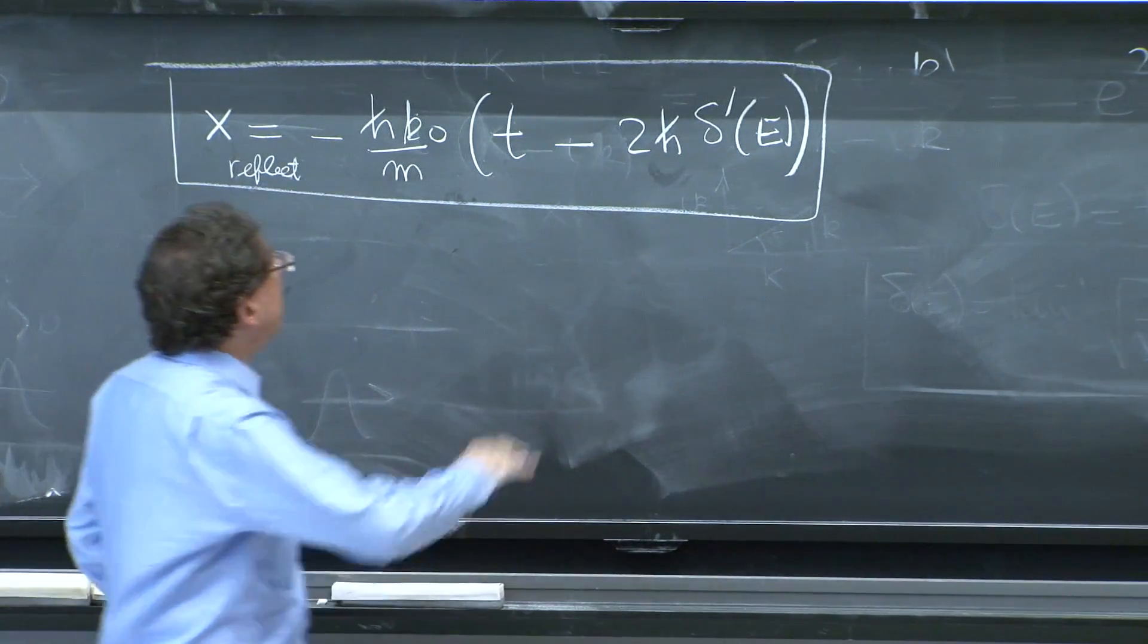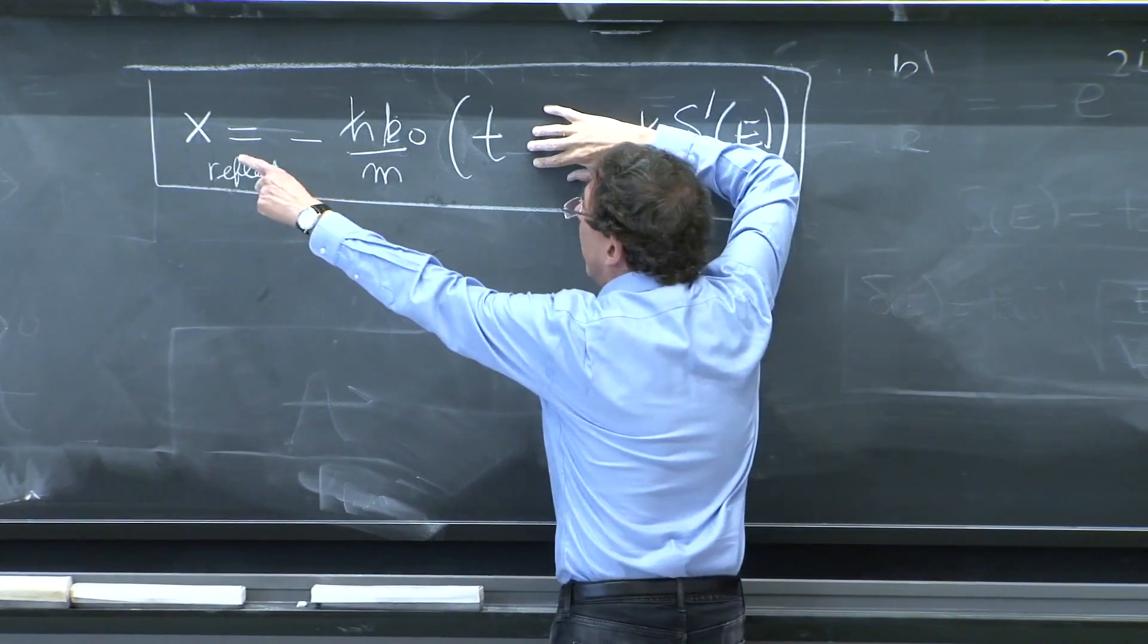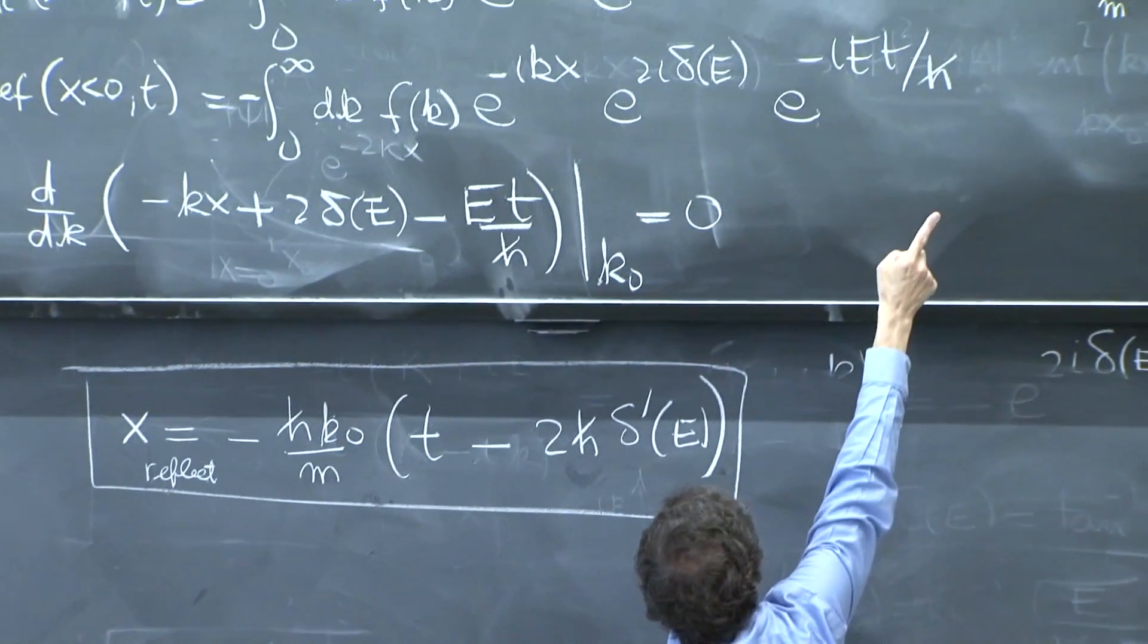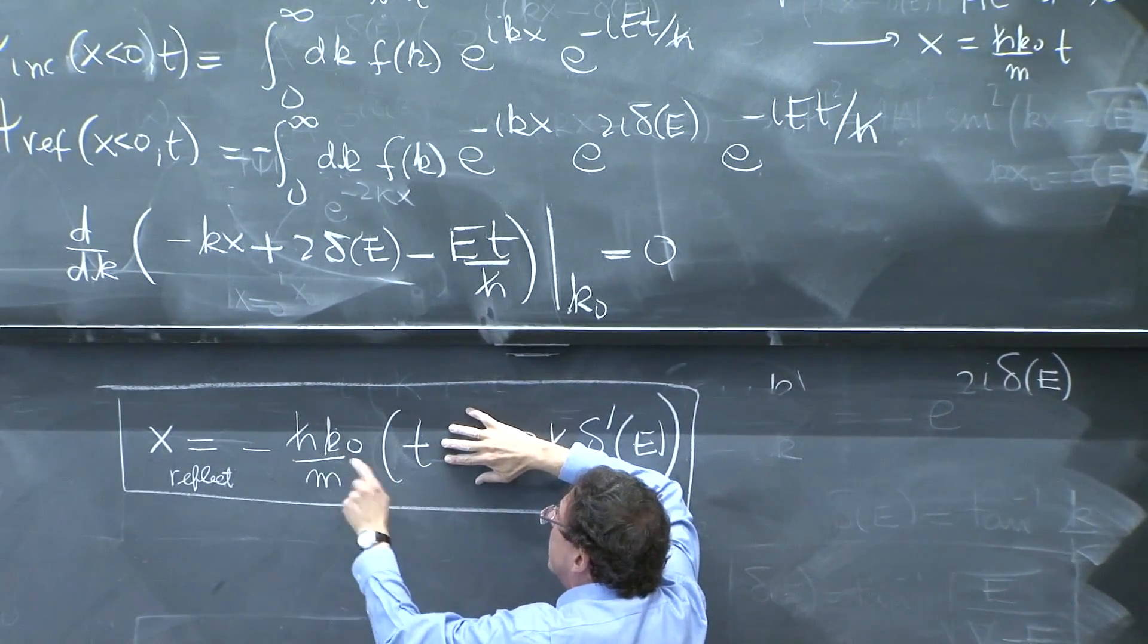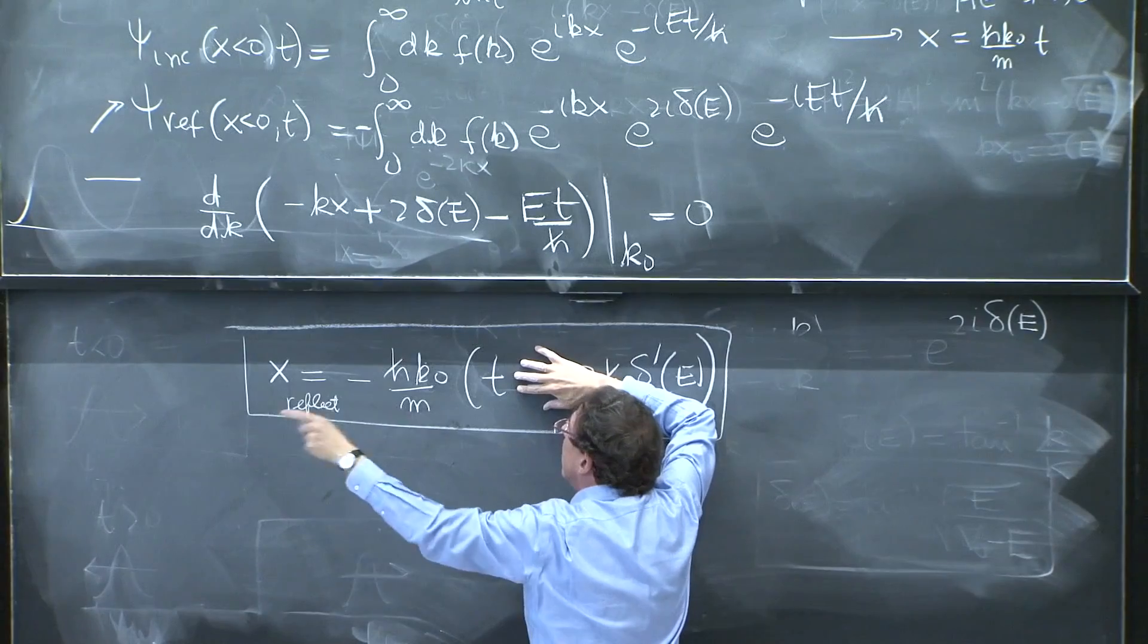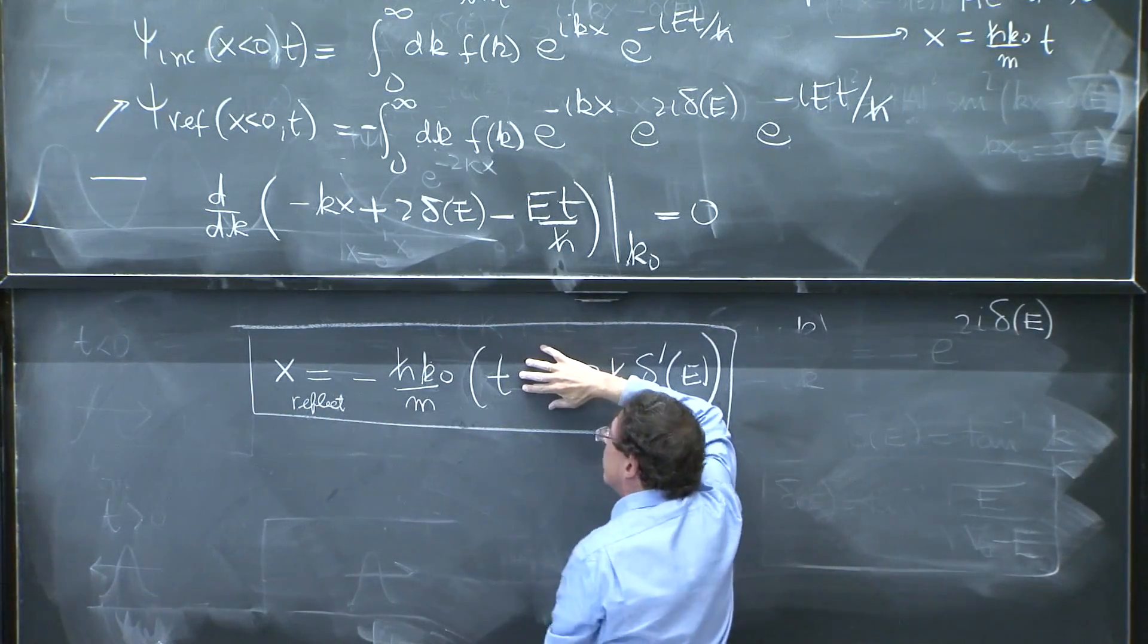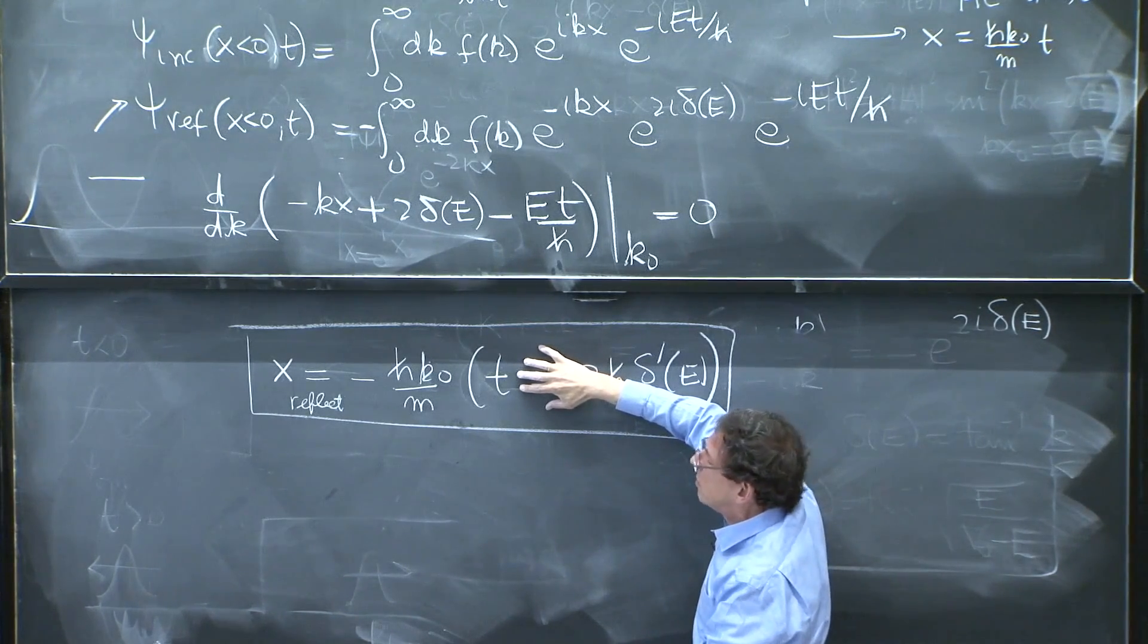Now, if this factor was not here, it is as if the incoming packet hit the origin at t equals 0. And this would be perfect bouncing, in which the packet gets reflected. And at t equals 0, it starts to move to the left. And as t increases, it moves more and more to the left. You see it there. Because x must be negative.